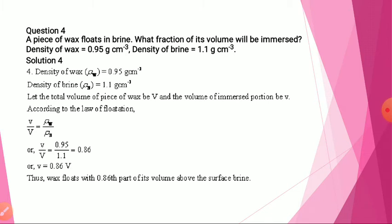Question number four: a piece of wax floats in brine. What fraction of its volume will be immersed? The density of wax is given and the density of brine is given. Let total volume of the piece of wax be capital V and the volume of the part immersed in brine be small v. Then small v upon capital V equals density of wax upon density of brine. From this we find that small v equals 0.86 times capital V — meaning 0.86 of the total volume is immersed in the brine.